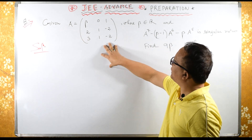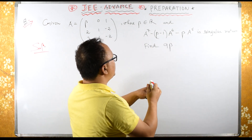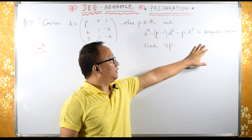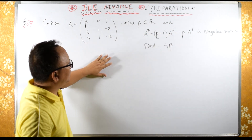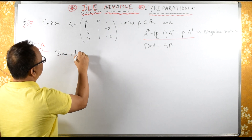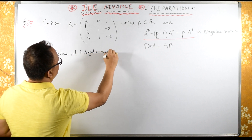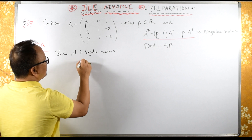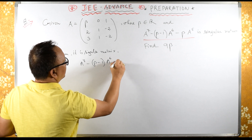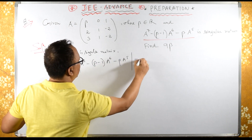Given A equals this matrix, where beta belongs to real numbers, and this is a singular matrix. Singular matrix means determinant of A equals zero. We need to find 9 beta. Since it is singular, we evaluate A raised to 7 minus (beta minus 1) A raised to 6 minus beta A raised to 5, and this determinant equals zero.